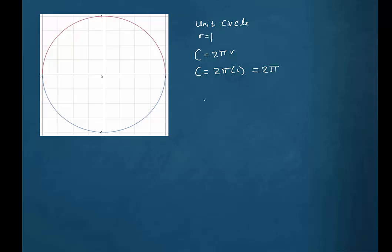One revolution of a circle would be the same as turning an angle of 360 degrees. Let's suppose that we start here on the positive part of the x-axis, and then we start to rotate around. If we go all the way around, then we have turned an angle of 360 degrees.